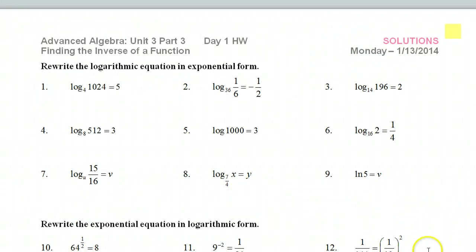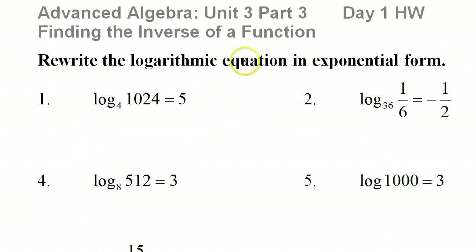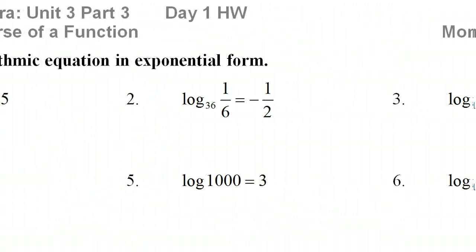Applying that to this lesson. All we're doing is rewriting in exponential form. So start with the base. So I've got a base of 4, and then these two will kind of switch places. So it will be 4 to the 5th power is equal to 1024.